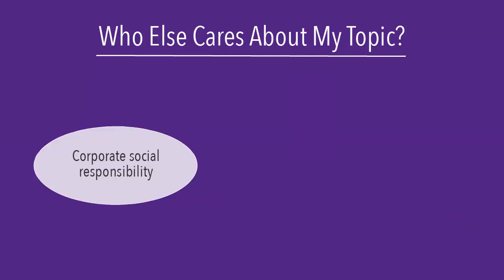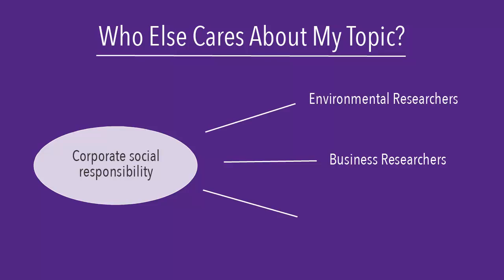It's also a good idea to think about which disciplines might have written something on your topic. People from several fields might be interested in corporate social responsibility, and they will all have unique points of view that can be helpful to my research paper. For example, I might want to search environment and public policy databases in addition to business databases for this topic.